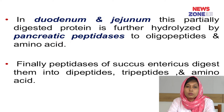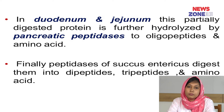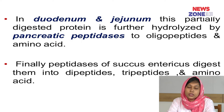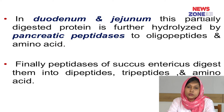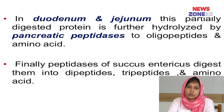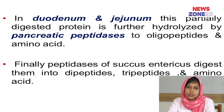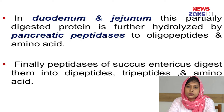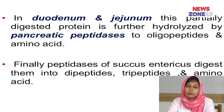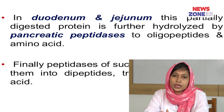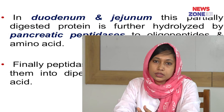In pancreatic juice, the pancreatic juice acts on this partially digested protein to make them oligopeptides and amino acids.